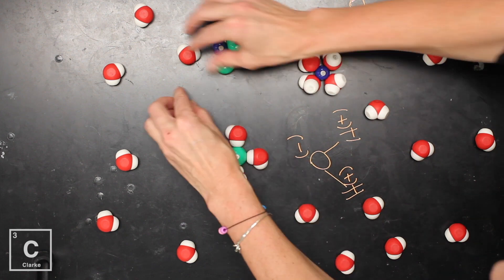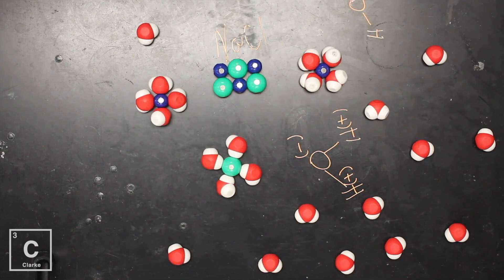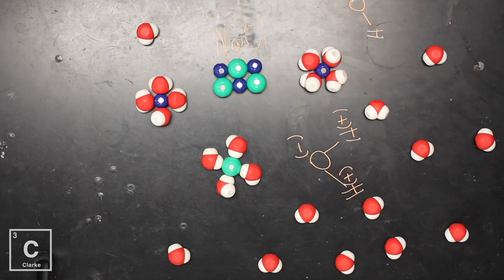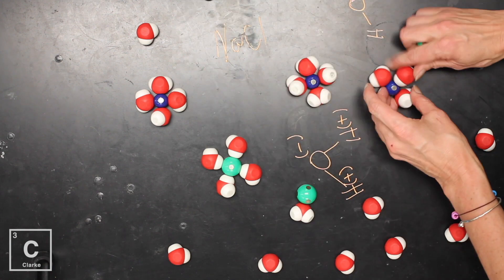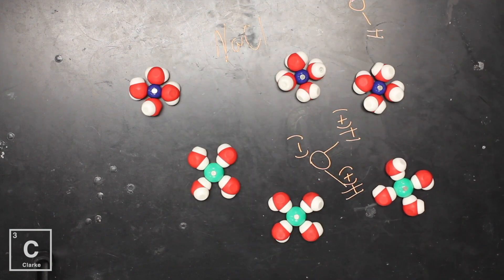We would still see salt particles and white crystals floating around until they are all completely disassociated. Ionic compounds completely disassociate. The water has come in, pulled all of the ions out of the crystal, and evenly distributed all of those ions throughout the mixture. Because remember, a solution is a homogeneous mixture.